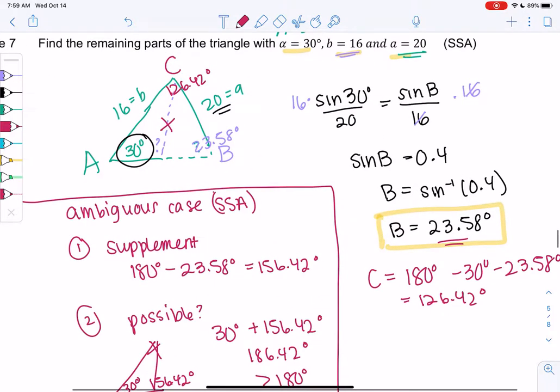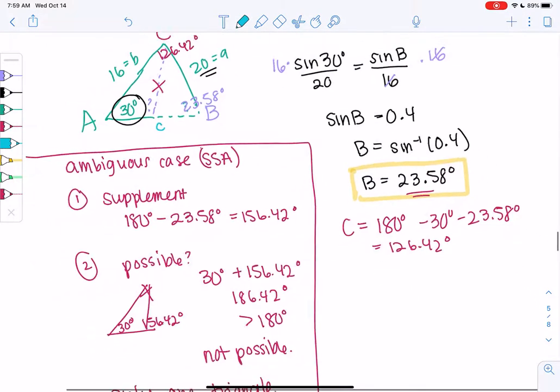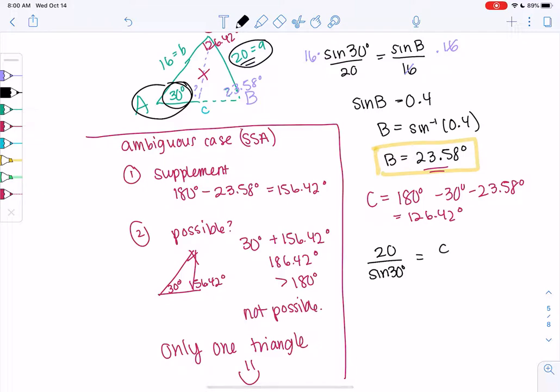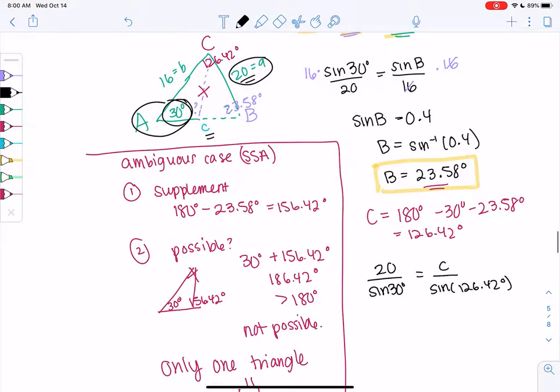And we'll just set up one final ratio for side C. So we will go ahead and say sine of, we'll say A over sine of A, 20 over sine of 30. Again, it doesn't matter which is on top. I decided to put the sides on top because we're solving for C. So C over sine of 126.42. You can always flip it if you feel like you set it up wrong. But I put the sides on top because I'm solving for a side. So 20 and sine of 30, C and sine of 126.42.